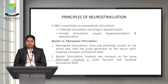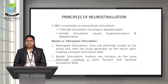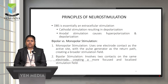The basic principle of neurostimulation is that Deep Brain Stimulation is essentially extracellular stimulation, where cathodal stimulation results in depolarization and anodal stimulation causes hyperpolarization. In monopolar stimulation, one electrode contact acts as the active site with the pulse generator as the return path, creating a broader stimulation field. In bipolar stimulation, two contacts on the same electrode are used, creating a more focused and localized stimulation field.